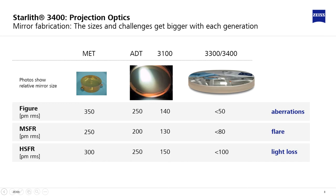This table summarizes the key performance improvements for figure, MSFR and HSFR on mirror level over the different size EUV lithography tool generations. The sizes of the mirrors became significantly larger from tool generation to tool generation. At the same time, the surface performance requirements have continuously been tightened with each EUV tool generation in order to comply with challenging imaging and throughput specifications.